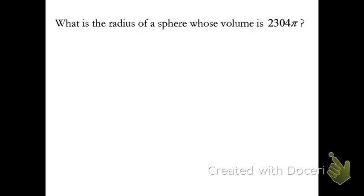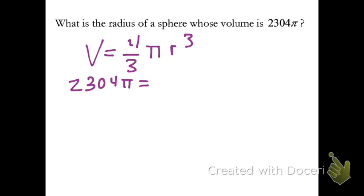So what is the radius of a sphere whose volume is 2304π? So volume is equal to 4/3 π r³. So for volume, I'm going to plug in 2304π and set it equal to 4/3 π r³.